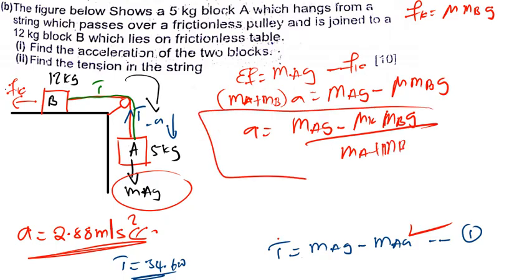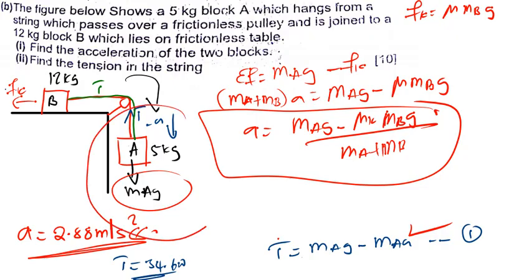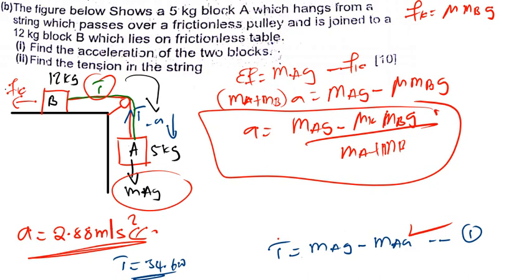This is the formula for the pulley system with friction. The tension force formula will change as well - it will now be the tension force minus the friction force, because the friction force is now acting on block B. Try to explore different types of questions under this topic; it will really help you understand more. Thank you.